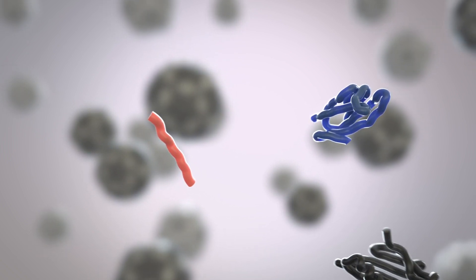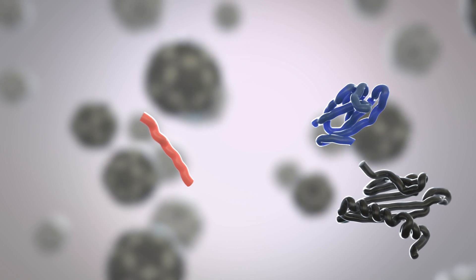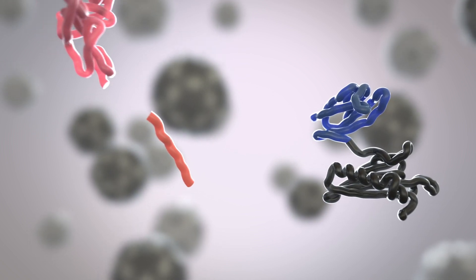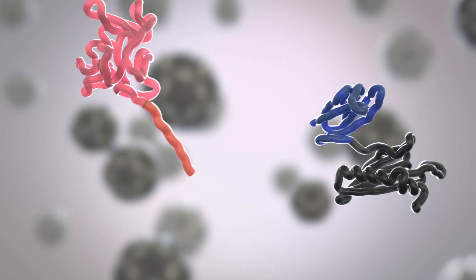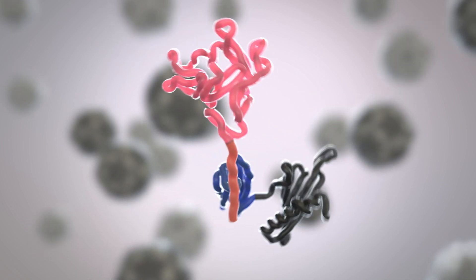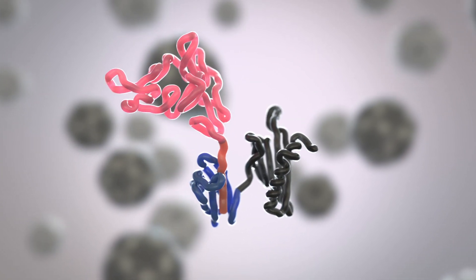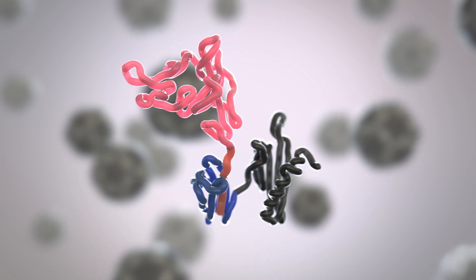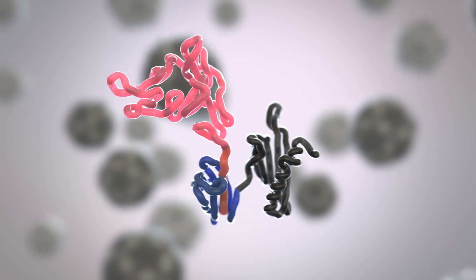Spy Catcher is linked to the coat proteins of virus-like particles, and Spy Tag is bound to antigens. Spy Tag and Spy Catcher can then bind back together and form an unbreakable covalent bond, binding together the coat protein and the vaccine's target antigen like molecular superglue.